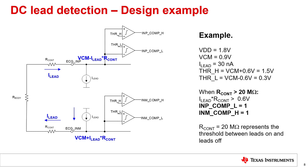A more realistic case might involve contact impedance at the INP and INM sides being of different values. Also, each electrode may have some DC offset, and this changes the exact value of contact resistance at which the leads-off thresholds are reached. The basic principles of operation outlined here can be extended to cover such cases.